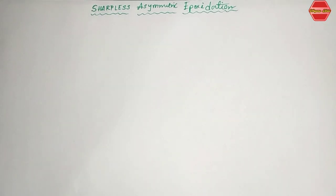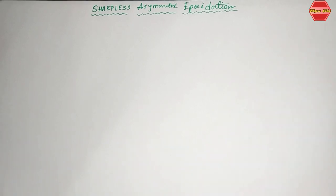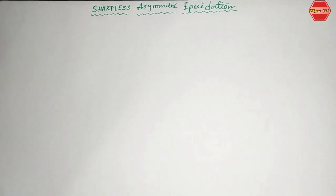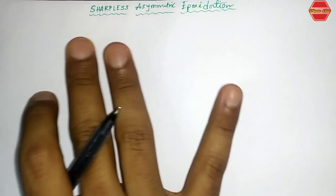Hello everyone, welcome to organic analysis. This is our concept through problem solving part. In this video we are going to learn about Sharpless asymmetric epoxidation. We are going to cover only the concepts, mechanism, and the reagents used for this reaction. In the next video we will discuss different types of questions, problems, examples, and previous year questions.